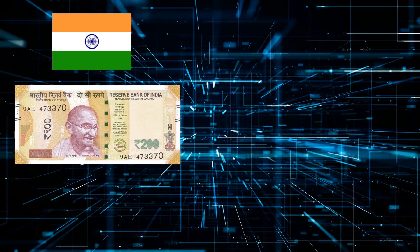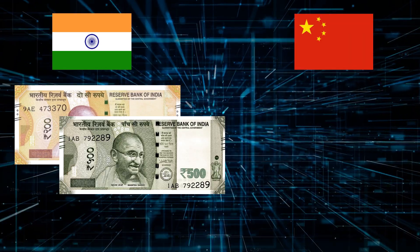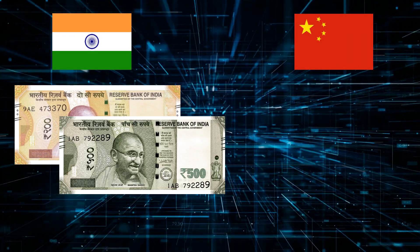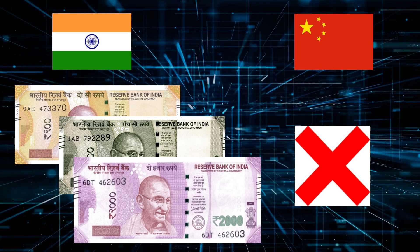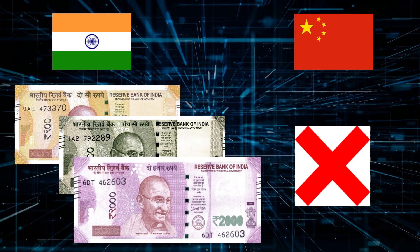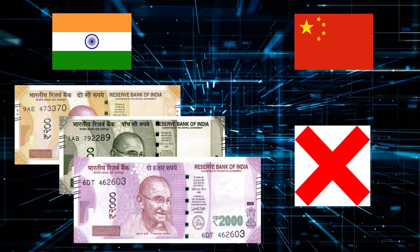Next are India's 200 Rupees, 500 Rupees, and 2,000 Rupees notes. But China's highest denomination is the 100 Yuan note — there are no higher denomination notes. Now let's see China's Jiao notes: China's 1 Jiao, 2 Jiao, and 5 Jiao notes.